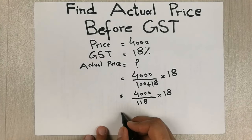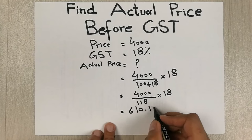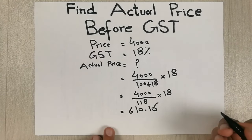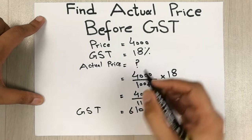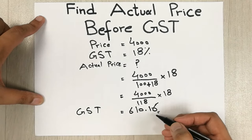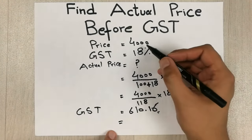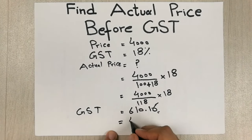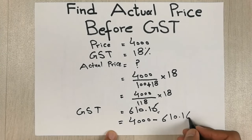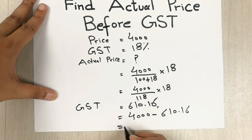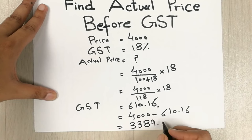When we do all this calculation, our answer will be 610.16. This is the GST — here it was in percent form and now we've found it in number form. Now it is very easy. We have to minus this: 4000 minus 610.16, and then we get our answer which is 3389.84.